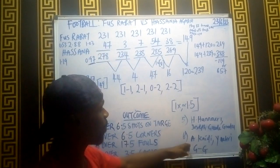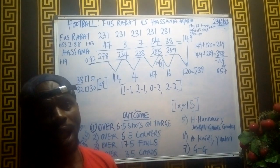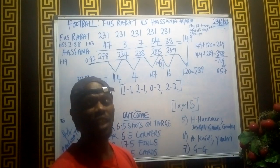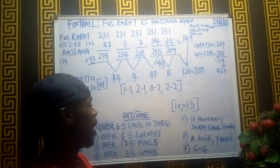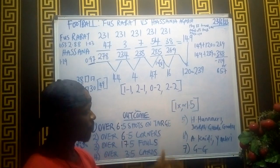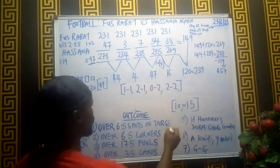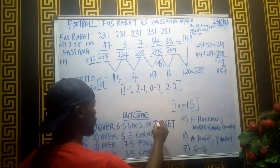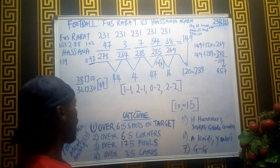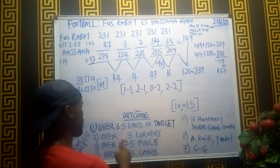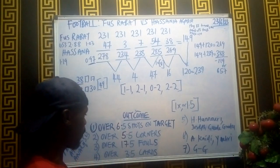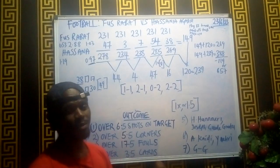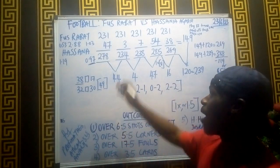For Hassania Agadir, Kadi and Y. Mary are the players to turn up tonight to make this a high-tempo, exciting game. Predicted stats: over 1.5, 1X, over 6.5 shots on target, 5.5 corners, 17.5 fouls, and 3.5 cards. These are practical possible outcomes for bookmakers.